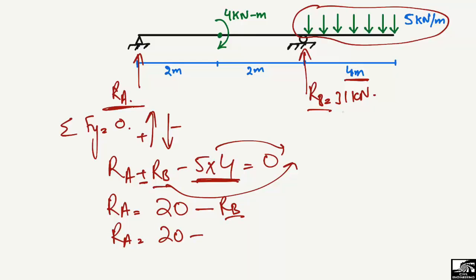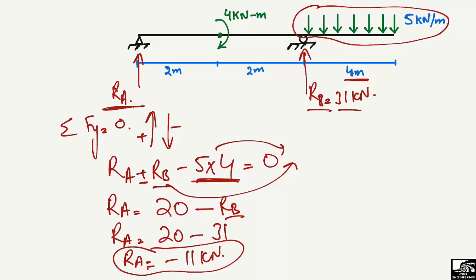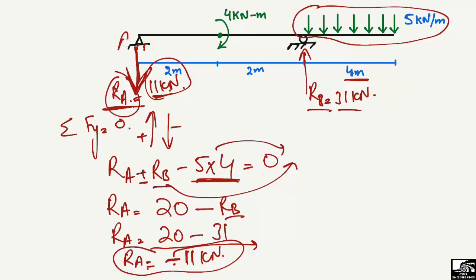Substituting RB = 31 kN: RA = 20 − 31 = −11 kN. The negative sign means our assumed direction for RA was wrong. We must change the direction — instead of upward, RA acts downward. The magnitude is 11 kN and the minus sign indicates the direction correction.